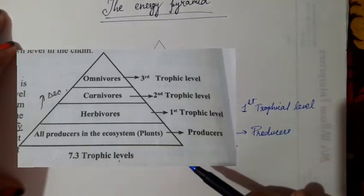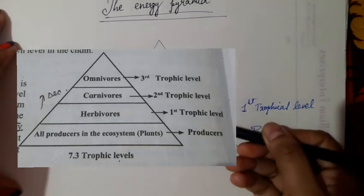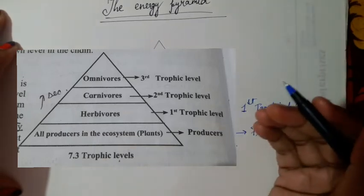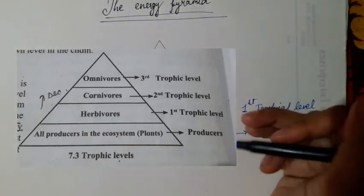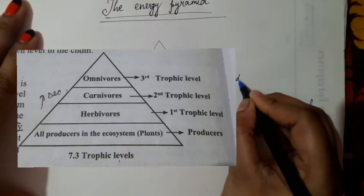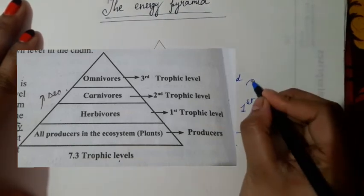Then these herbivores are eaten by the carnivores and they also get energy which is much lesser than the herbivores. Therefore they are called as the secondary, or you can say second trophic level.